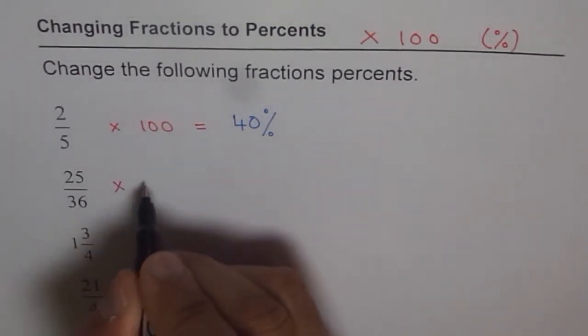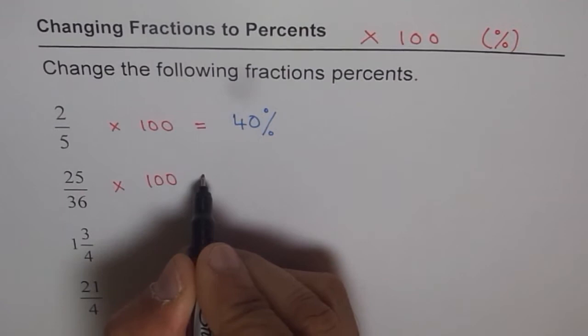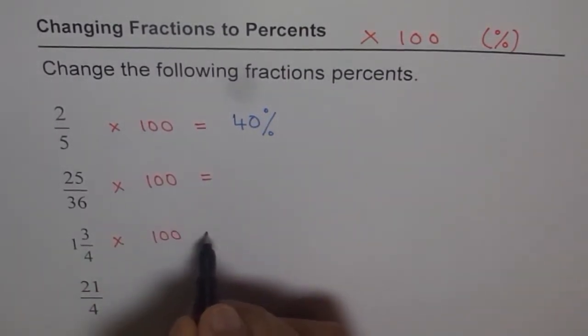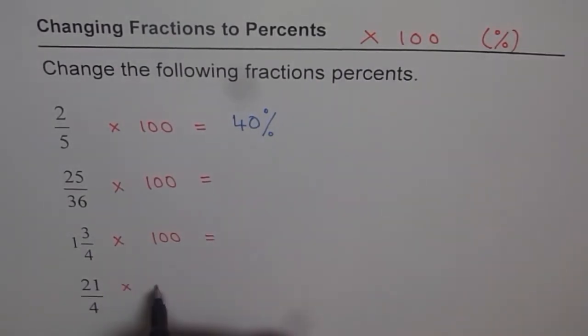Just use your calculator and go ahead and solve all these questions. So very simple. Just times it with 100 and then write with a percent sign. If you get decimals, keep them. In the answer, that is kind of important.